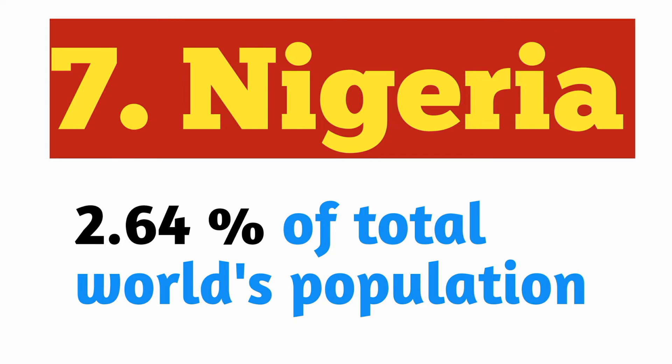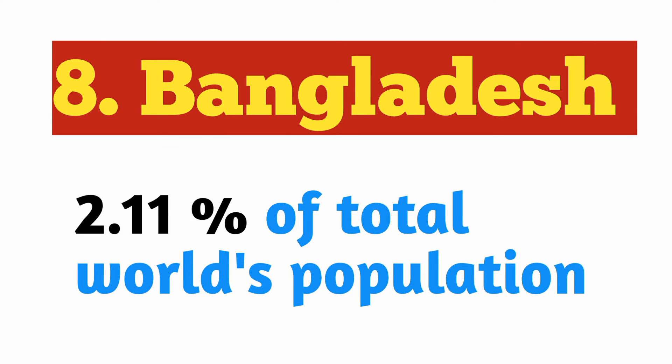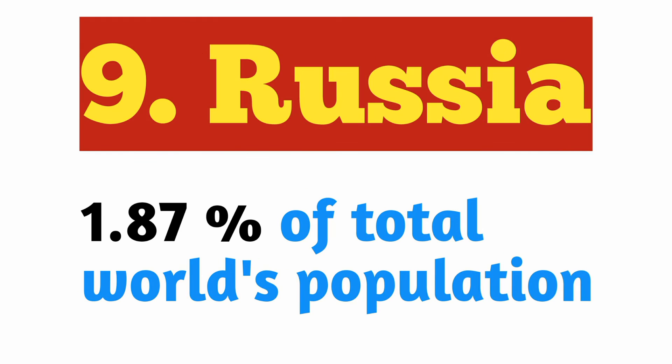Number 7: Nigeria. Nigeria comprises 2.64% of total world's population. Number 8: Bangladesh. Bangladesh comprises 2.11% of total world's population.